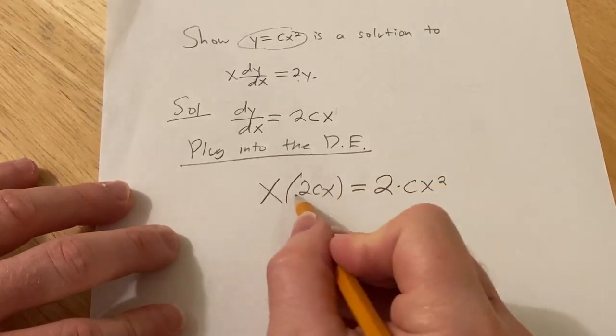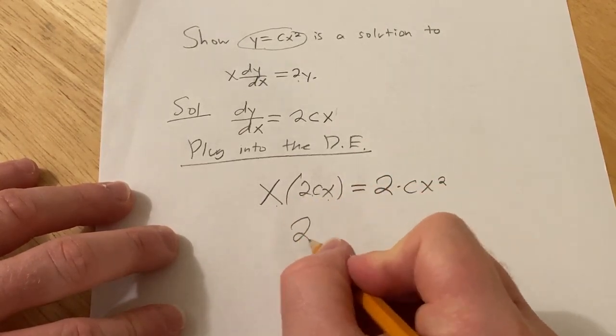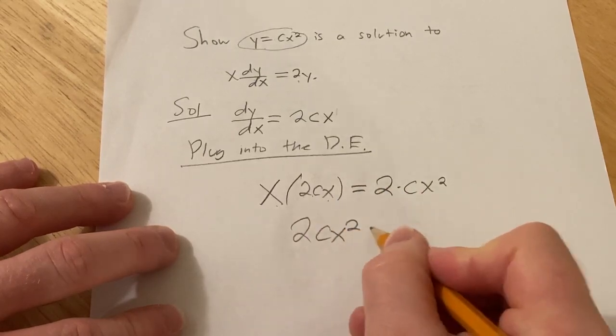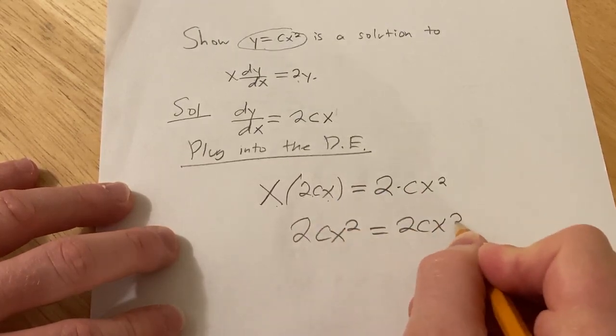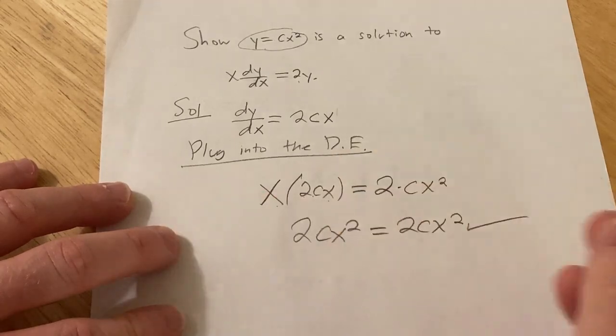So here we can clean this up. We have 2c x times x is x squared. And then here we also have 2c x squared. They're the same so we're done with the problem.